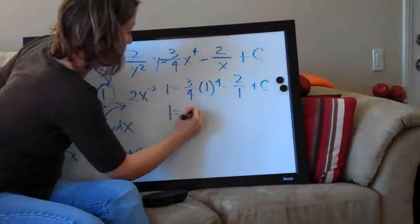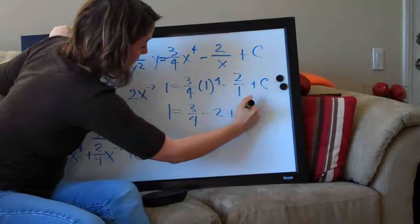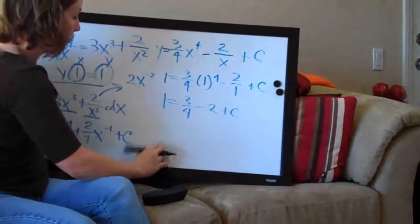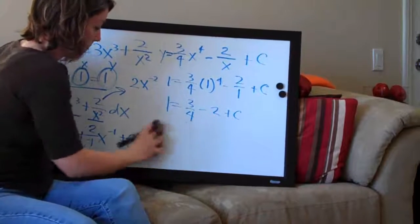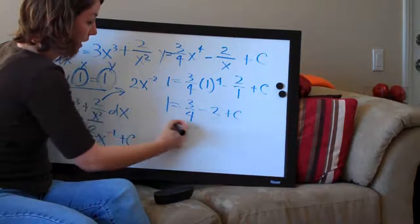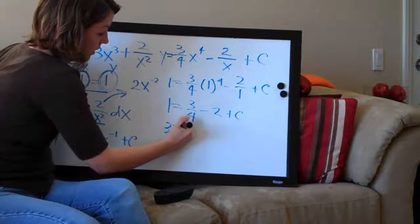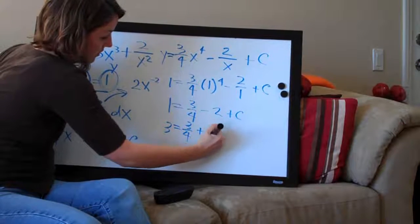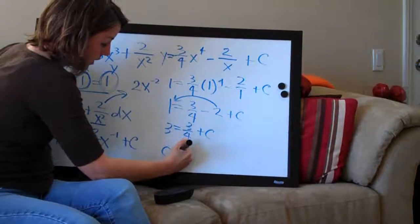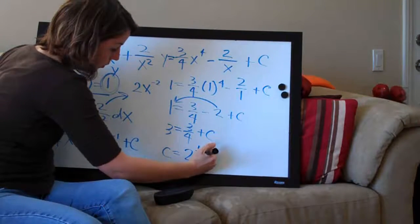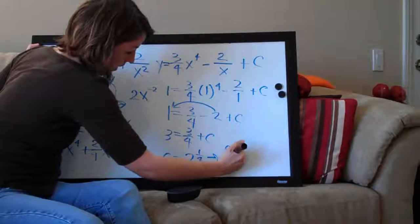So we have 1 equals 3 fourths minus 2 plus C, since 1 to the fourth is just 1. Let's add 2 to both sides first, which is easiest. That gives us 3 equals 3 fourths plus C. Then subtracting 3 fourths from both sides, we get C equals 2 and 1 fourth, which is the same as 9 over 4.